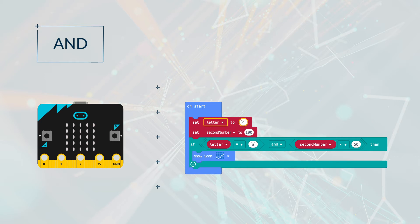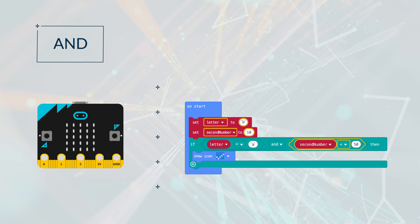If letter was A but second number was 100, then it will return false, because only one side is true. If letter was B but second number was 10, then it will return false, because only one side is true. If letter is A and second number is less than 50, for example 30, then it will return true, because they're both true.